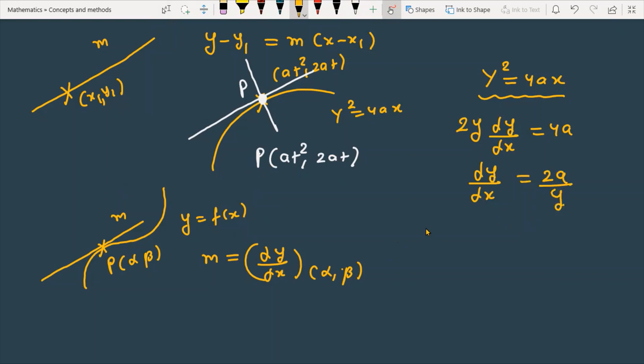Now let's substitute the y-coordinate of the given point which is 2at. If I replace this, then dy/dx = 2a/(2at) which simplifies to 1/t. This means the slope of the tangent is equal to 1/t.